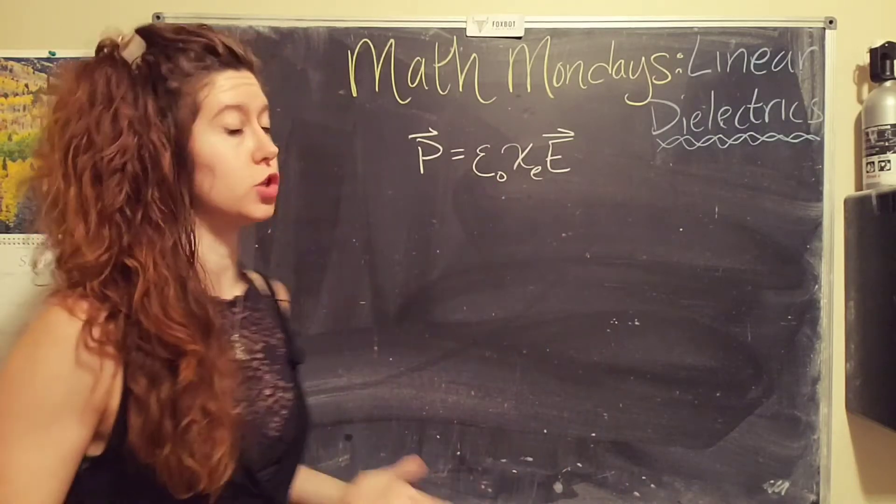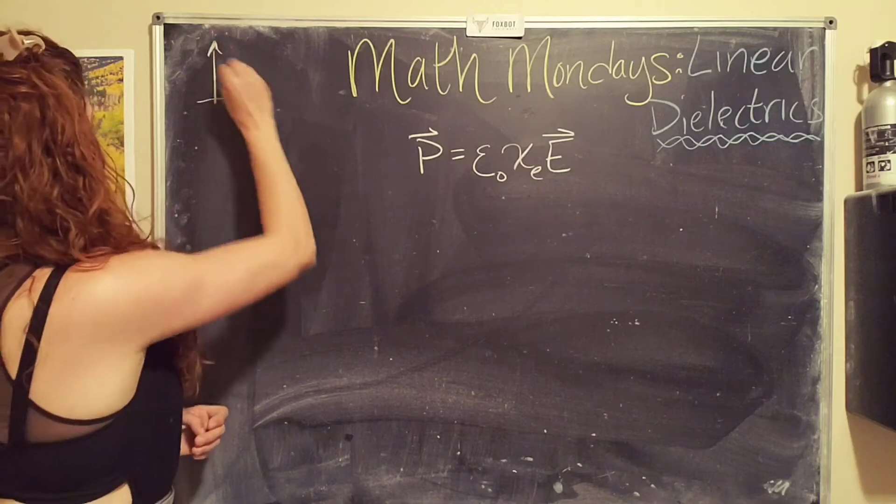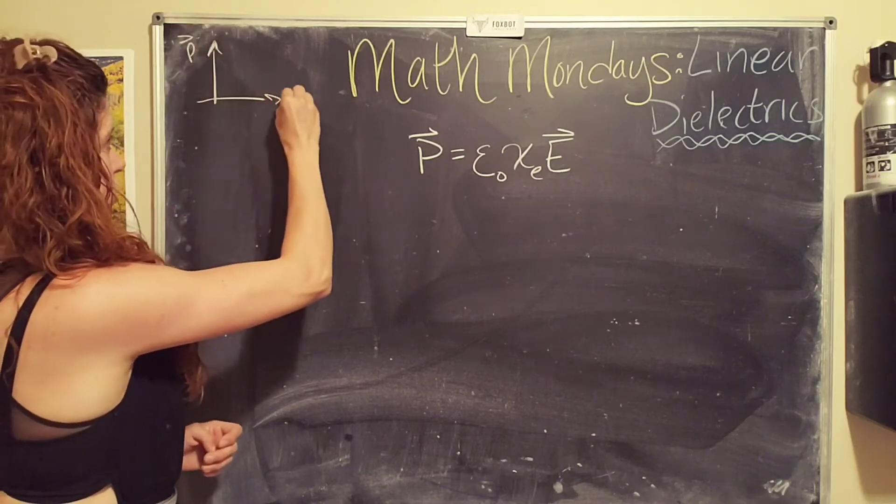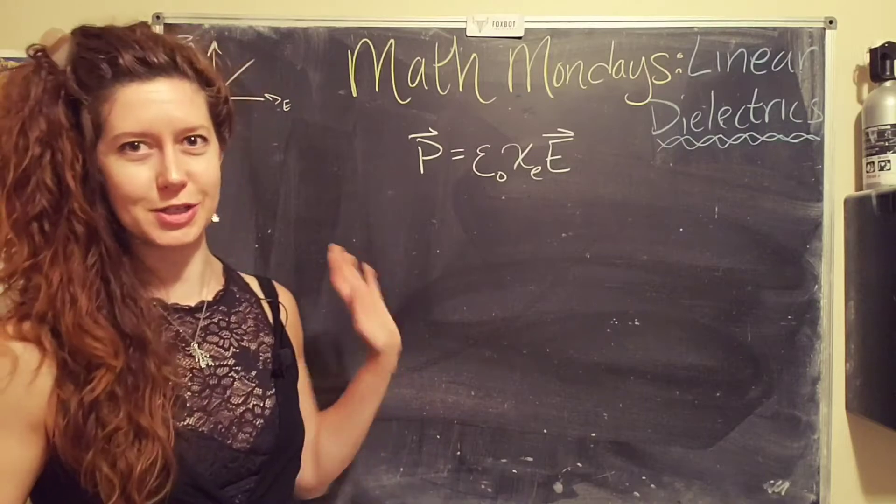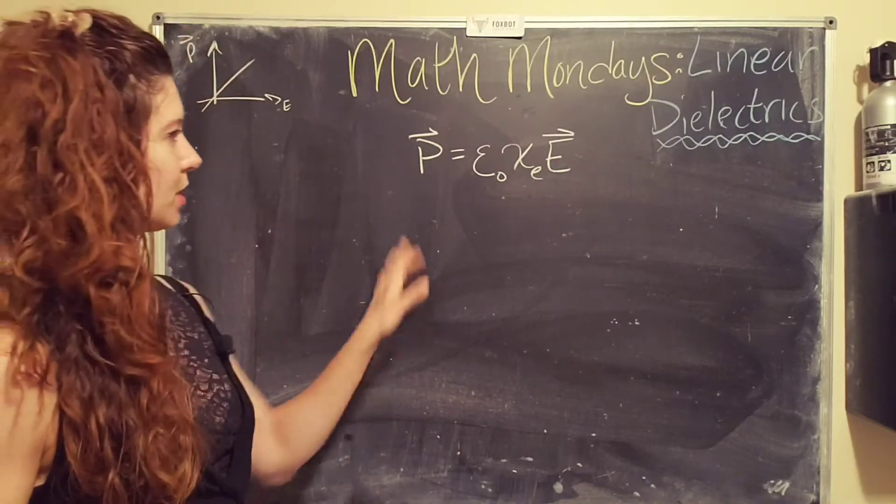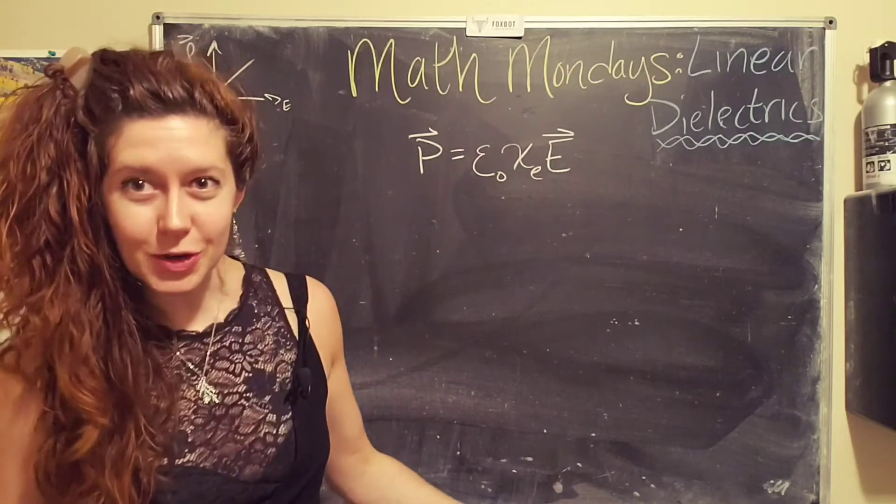And this is where the term linear comes in. This is a linear relationship. Because if we were to plot the polarization as a function of the electric field, it would look something like that. Not to scale. I don't know what that slope is. And it would depend on the material.